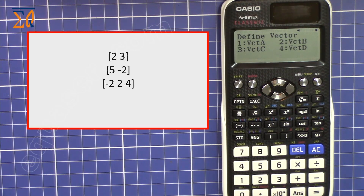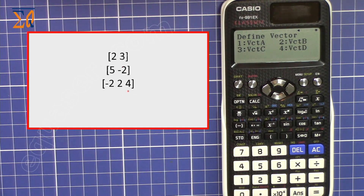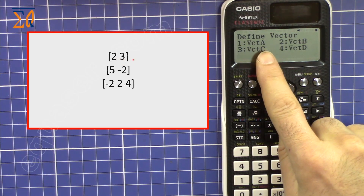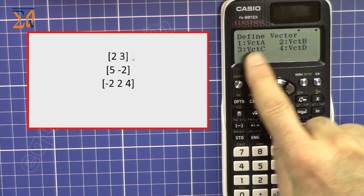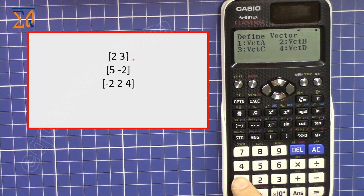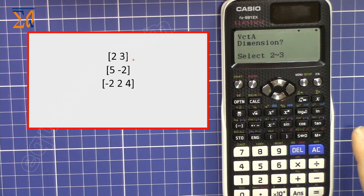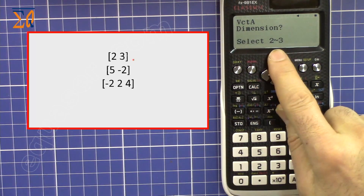If you look at the vectors I have here, I have a 2×2 vector — so this is a 2D vector — and this is also a 2D vector, and this is a 3D or 3-dimensional vector. So let's say you want to enter this one and store it in vector A, which is 1. I'm pressing 1.